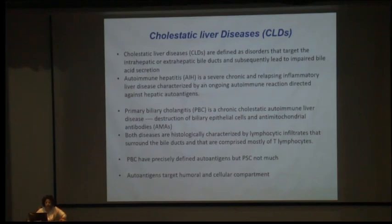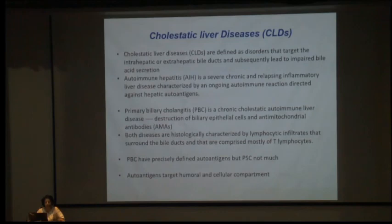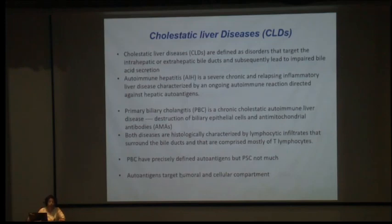Both autoimmune hepatitis and PBC are histologically characterized by lymphocytic infiltrates that surround the bile ducts, comprised mostly of T lymphocytes. PBC has well-defined autoantigens; PSC does not have as much data. These autoantigens target both humoral and cellular immune components.